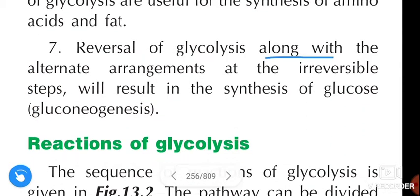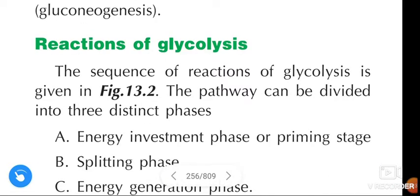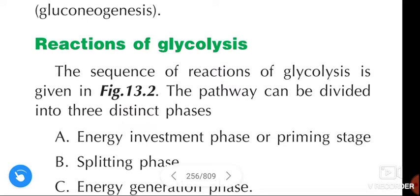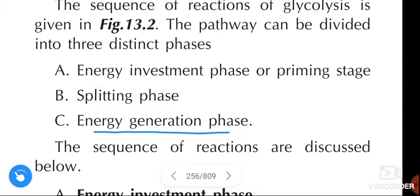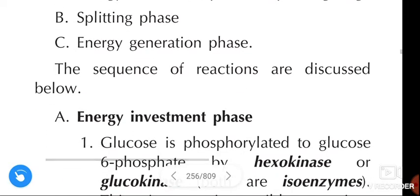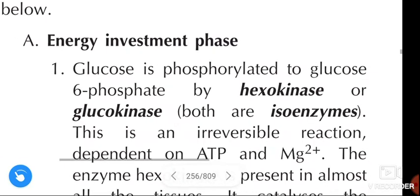The reversal of glycolysis along with alternate arrangements for the irreversible steps will result in the synthesis of glucose — that is gluconeogenesis. The glycolysis pathway can be divided into three distinct phases: energy investment phase, splitting phase, and energy generation phase.